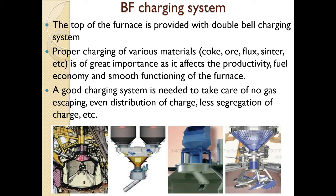In the double bell system, material is charged into the upper bell while the lower bell is closed; then the upper bell opens and material drops onto the lower bell, sealing against gas escape. The lower bell then opens and material falls through; a chute distributes the material. You can change the angle of the chute to control the layer arrangement — coke, sinter, pellets, or ore — and manage segregation to some extent.